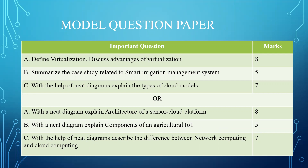Here you will be seeing the different questions. First, understand one thing: when you read the question, read it properly. See how the question is split up. If you see the first question — define virtualization, discuss advantages of virtualization — it is clearly understood that first the definition should be there, then you have to list down the advantages, and each advantage has to be explained thoroughly, totally containing 8 marks. When you read the question, you should be clear about what answer should be written.